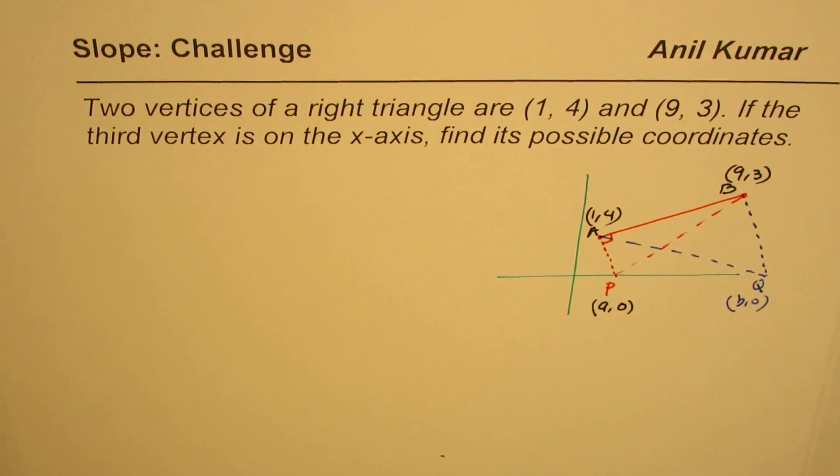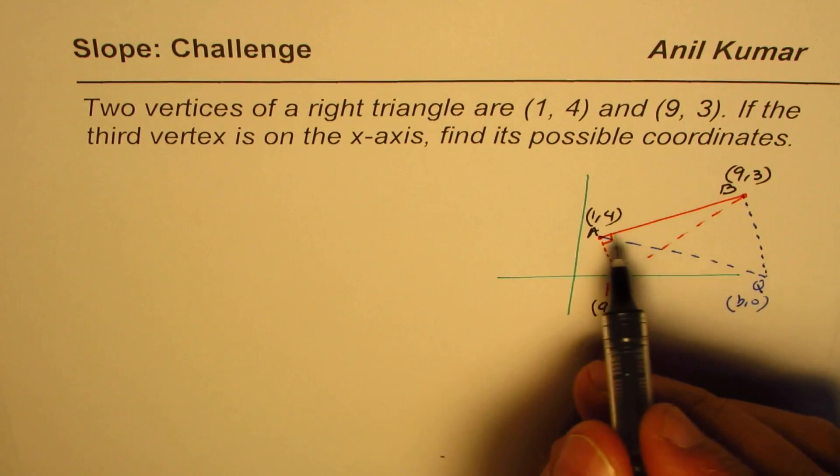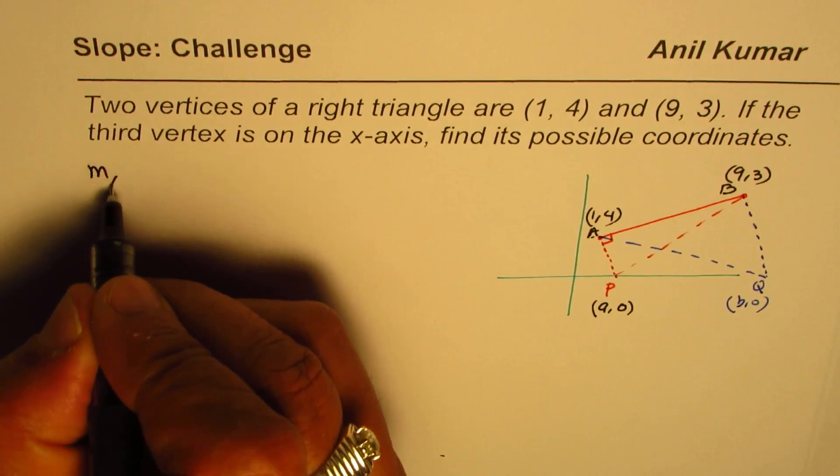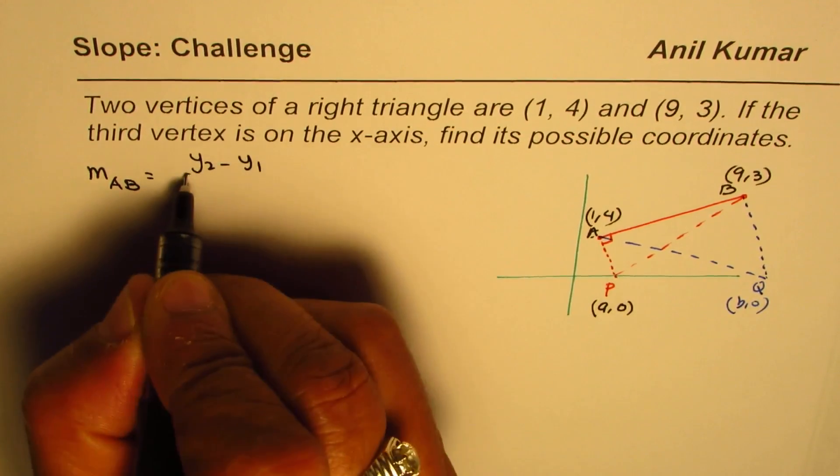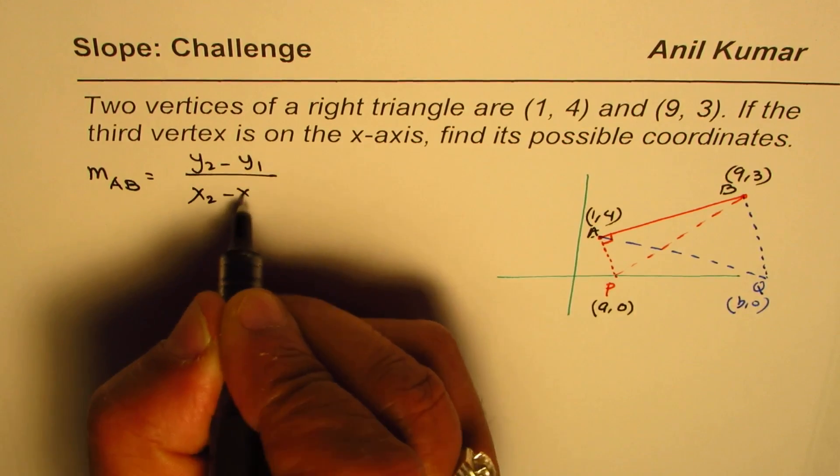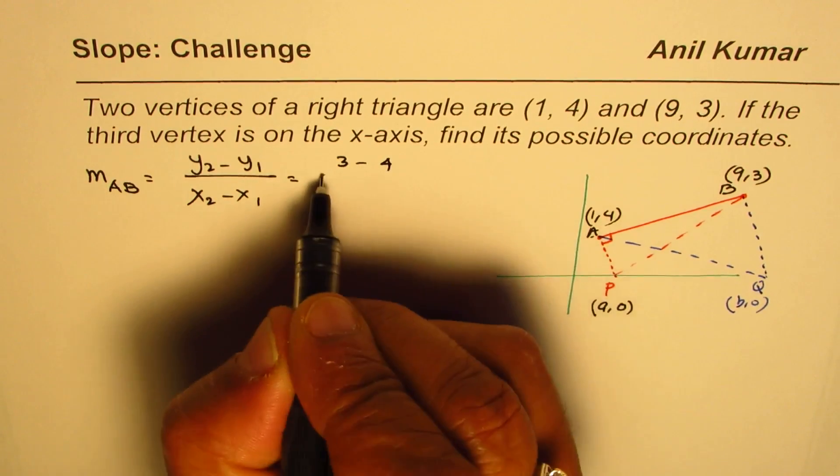So let us find a first. For that we'll find slope of the line AB. So M_AB equals (y2 - y1)/(x2 - x1), which is (3 - 4)/(9 - 1) = -1/8. So that is the slope of line AB.